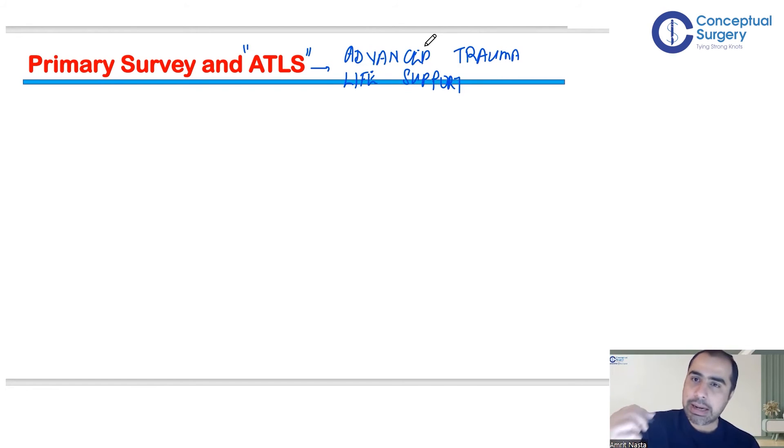What do these ATLS guidelines tell you? Similar to how cardiac arrest has ACLS guidelines (Advanced Cardiac Life Support), ATLS tells you that any patient who comes with polytrauma will be managed on two fronts. The first is called primary survey. This is the building block.